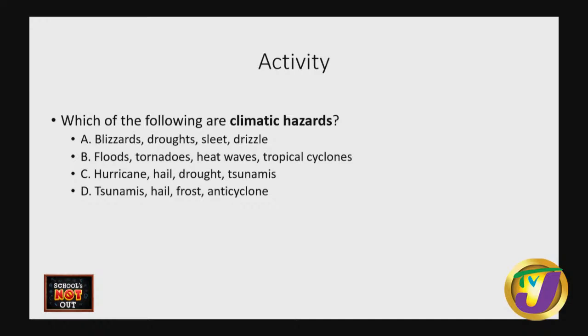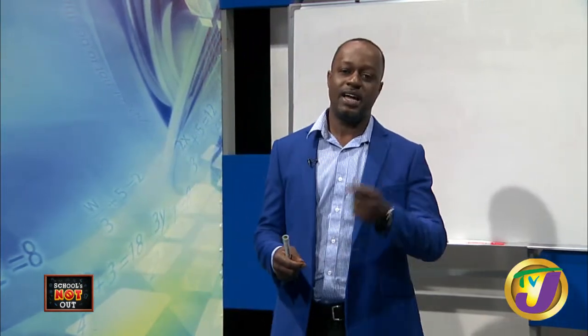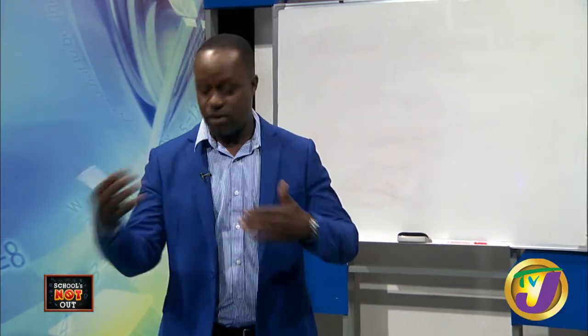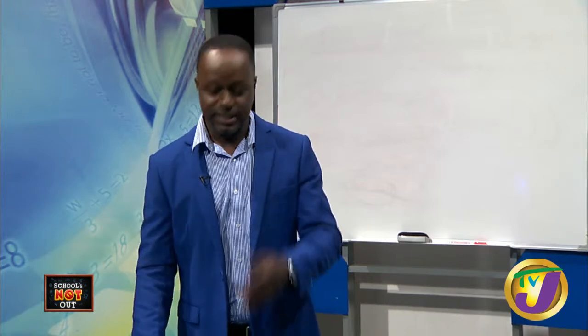When does a hazard become a disaster? If we have a category 5 hurricane at sea over remote open waters, with winds of 250 kilometers per hour or more, but it doesn't reach land - is it a hazard or a disaster? The correct answer is hazard. Hazards become disasters when they affect human beings. We humans are often the ones who put ourselves in the way of these natural hazards.